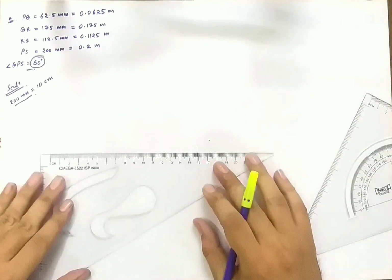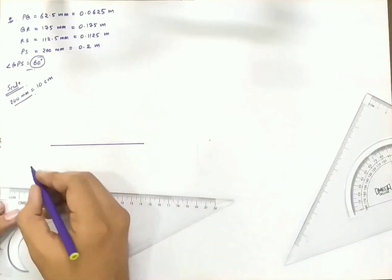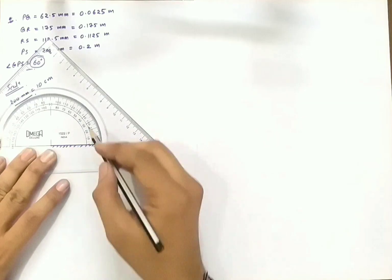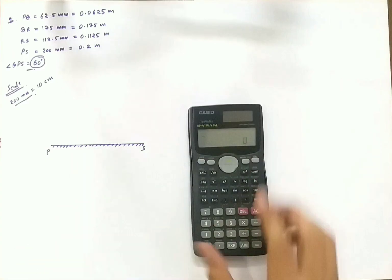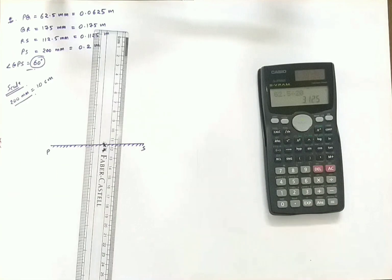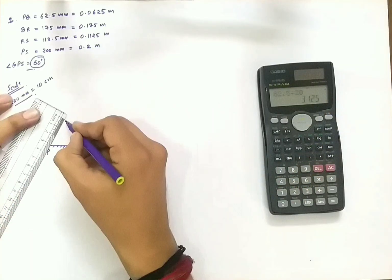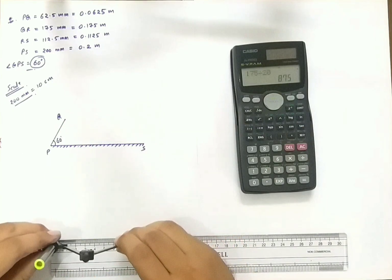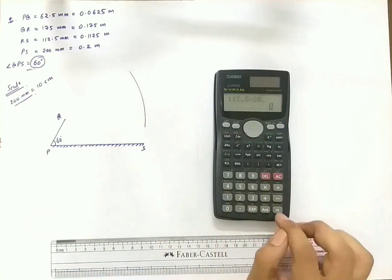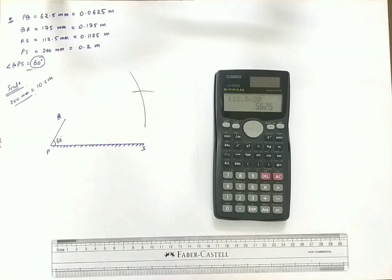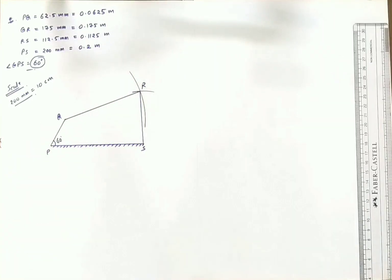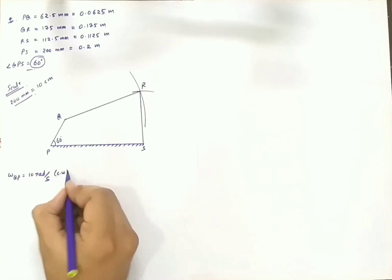Before drawing the space diagram we have to choose the proper scale. We have taken 20 mm equal to 10 centimeters. PS is taken as 10 centimeters according to scale. QPS is equal to 60 degrees, so we mark at 60 degrees — that is PQ, approximately 33.12 centimeters. To find out point R we go for an arc of 8.7 and half of 5.6, and that intersection point is R. Space diagram is now completed.